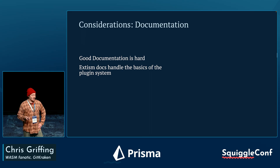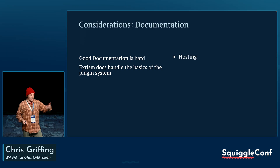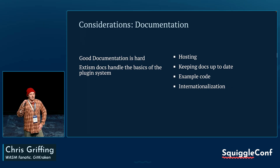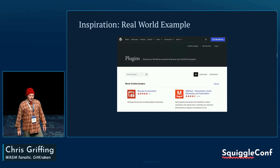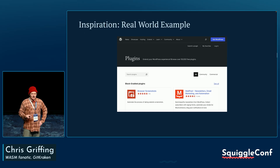What about documentation? Good docs are hard. Extism docs handle the basics of a plugin system, but what about the events and things we would do in GitKraken? That would be a lot harder to document, keep up to date, and make sure examples are right. We'd have to host it somewhere, keep it up to date, have example code, and maybe even internationalize it. Just because there's a plugin system available with Extism doesn't mean it's all solved for you. Take notes from real-world examples like WordPress — probably the largest plugin system in the world — or Figma.